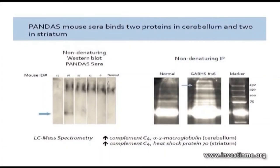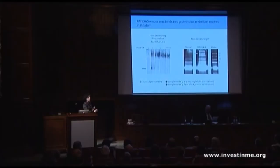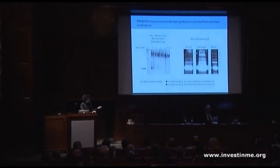After about six months of looking for the target of this putative autoantibody, we determined it was likely a conformational antibody. So we used non-denaturing techniques — non-denaturing immunoprecipitation — and found after mass spectrometry that the targets appeared to be complement C4 (antibodies to C4B are present in lupus, for example), also antibodies against alpha-2 macroglobulin in the cerebellum, and also heat shock protein 70. We cloned the human homologue, put it into a suitable vector, and used a commercial antibody against heat shock protein 70.